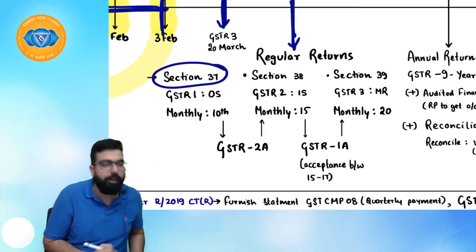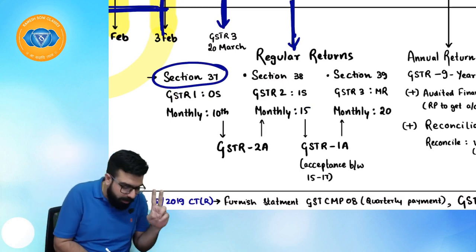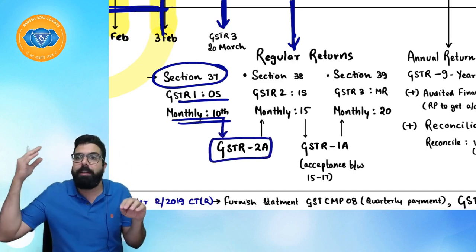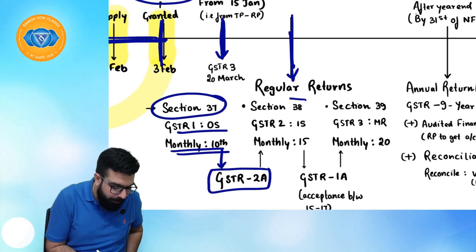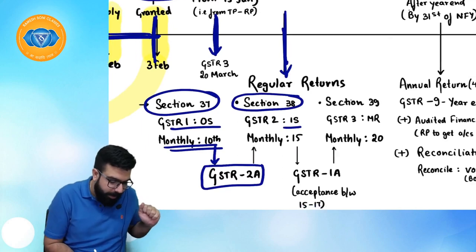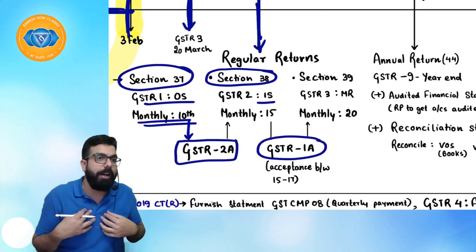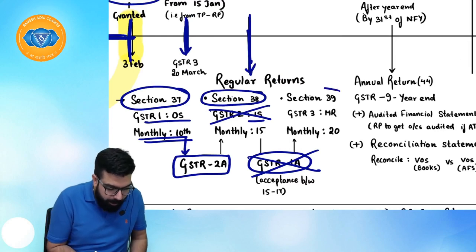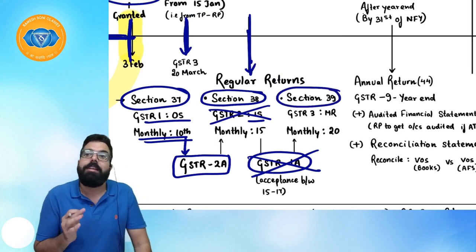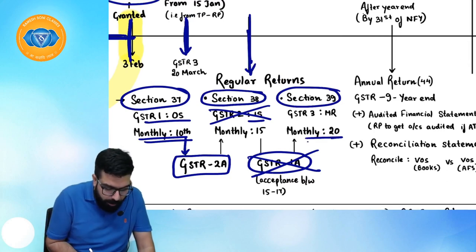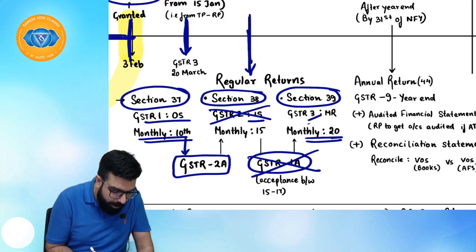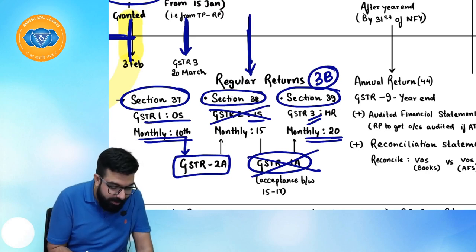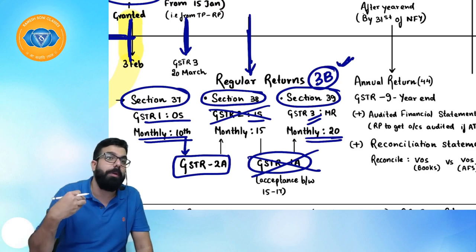GSTR-1 details auto-populate in GSTR-2A for the recipient. The recipient files GSTR-2 (Section 38) by the 15th. Note: GSTR-2 and GSTR-1A are not applicable for your exam. Then GSTR-3 (monthly return) was to be filed by the 20th. However, GSTR-3 is now replaced by GSTR-3B — a summary return where you declare your sales, inward supplies, make payment, and file — and GSTR-3B filed is treated as the return under Section 39.